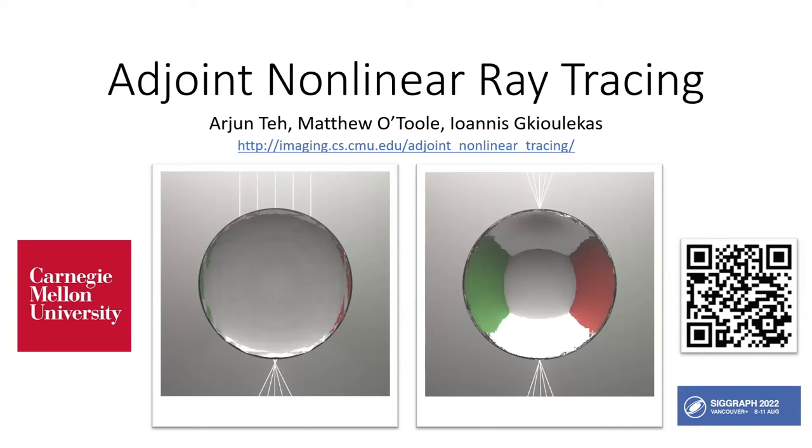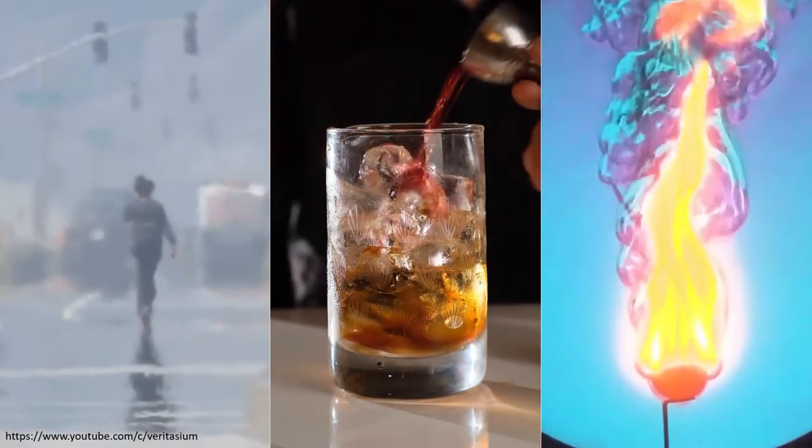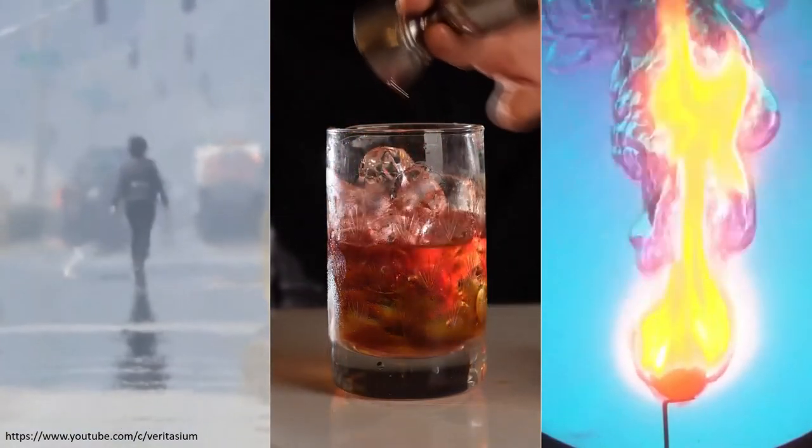In the real world, rays of light curve through materials like mirages, mixed drinks, and gas flows due to their heterogeneous makeup.